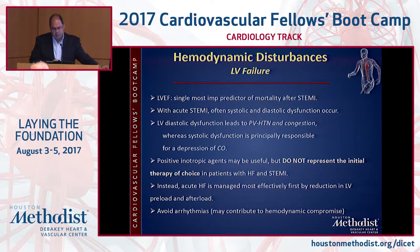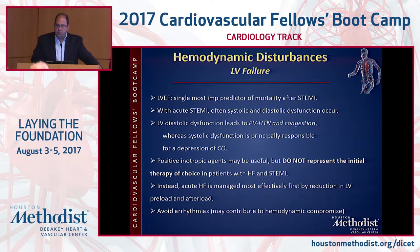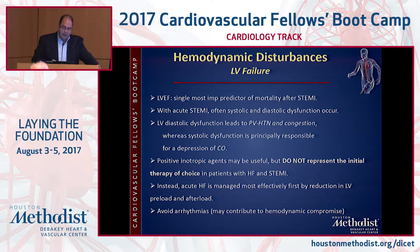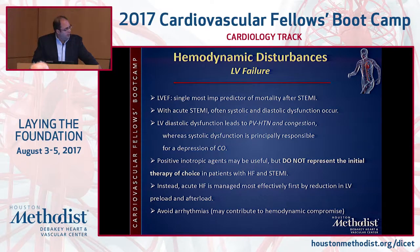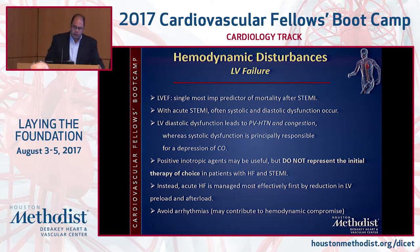The second hemodynamic disturbance is LV failure. LV function is the single most important predictor of mortality after acute MI. With acute MI you have both systolic and diastolic dysfunction, contributing to congestion and diminished cardiac output. Although positive inotropes may be useful, they're not the initial treatment of choice. If possible, unload the heart initially to reduce afterload and preload, provided the patient does not have hypotension, pre-shock, or cardiogenic shock.